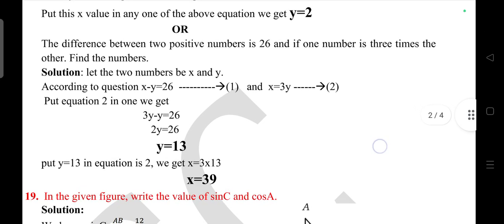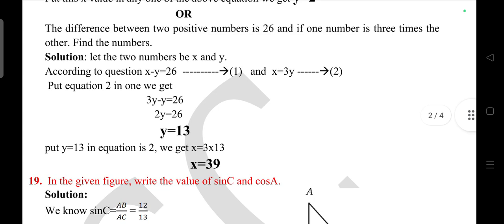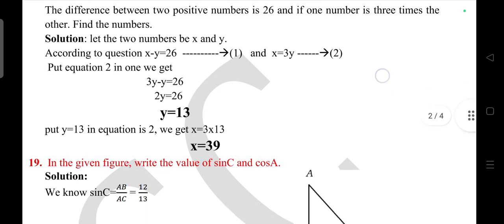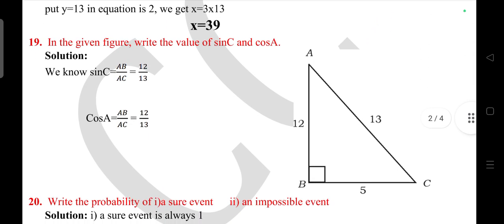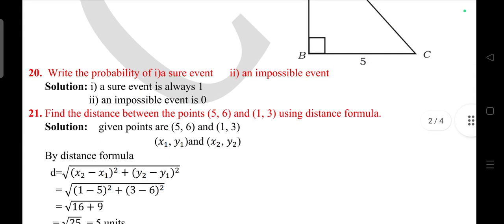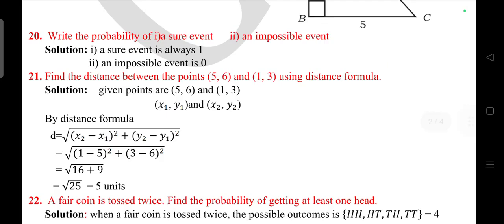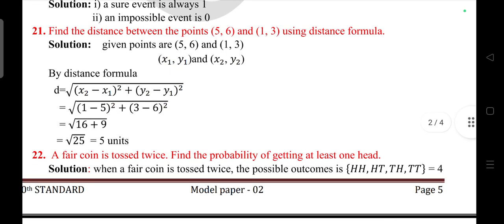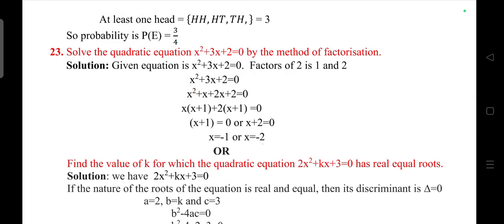Question 19: The difference between two positive numbers is 27, and if one number is three times the other, then find the numbers. Question 20: In the given figure, write the value of sin C and cos A. Question 21: Write the probability of a sure event or impossible event. Question 22: Find the distance between the points (5, 6) and (1, 3) using the distance formula.